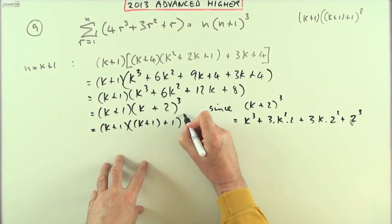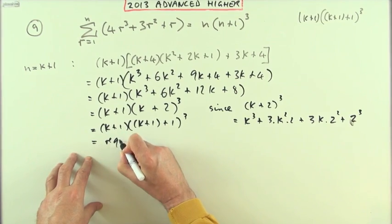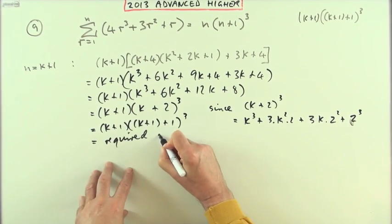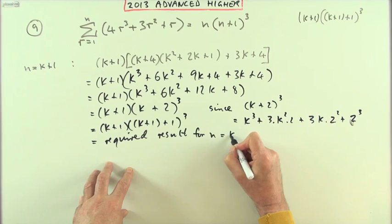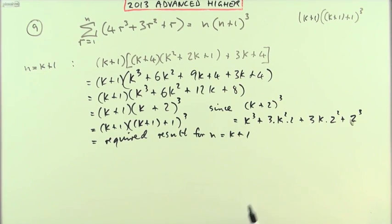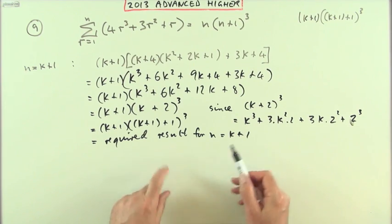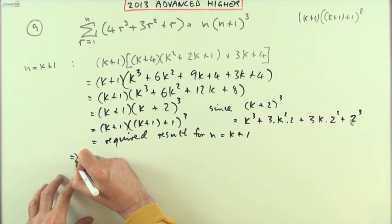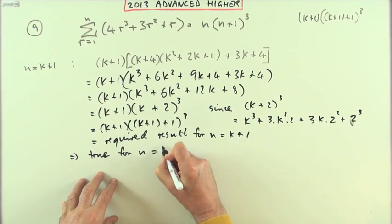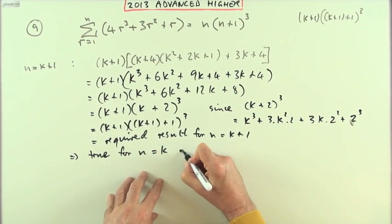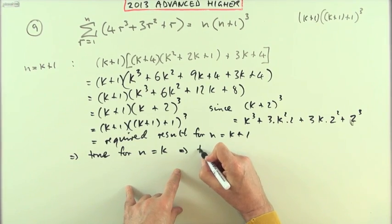Which equals, and then just put it into its final form: (k+1) times (k+1+1)³, which is the required result. That's the required result for n equals k plus 1, which meant if it were true at n equals k, it's turned out to be true for the next step.